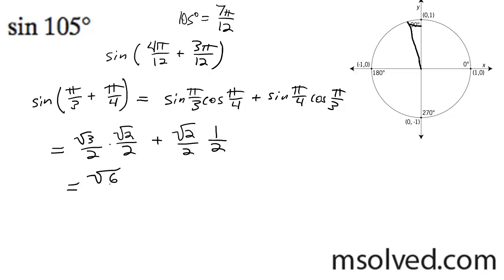Multiplying these out, this is √6/4 plus √2/4, and this becomes (√6 + √2)/4. That's it.